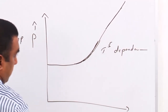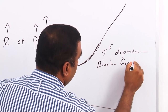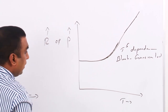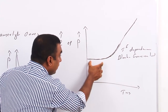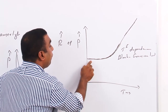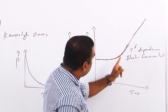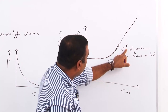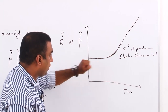This T-raised-to-5 dependence is called the Bloch-Grüneisen law. As we decrease the temperature further, the graph becomes almost flat, which means in this region the resistance or resistivity is entirely independent of temperature. So we have a linear variation at high temperatures, a non-linear T⁵ variation in the intermediate region, and a constant value at very low temperatures.